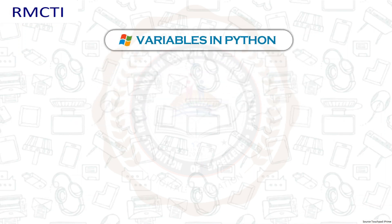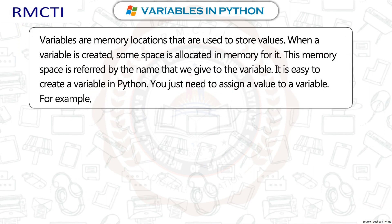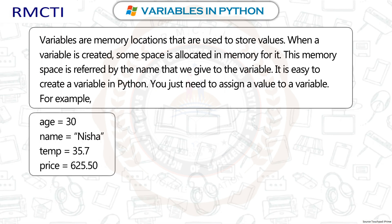Variables in Python. Variables are memory locations that are used to store values. When a variable is created, some space is allocated in memory for it. This memory space is referred to by the name we give to the variable. It is easy to create a variable in Python — you just need to assign a value to it. For example: age = 30, name = 'nisha', temp = 35.7.